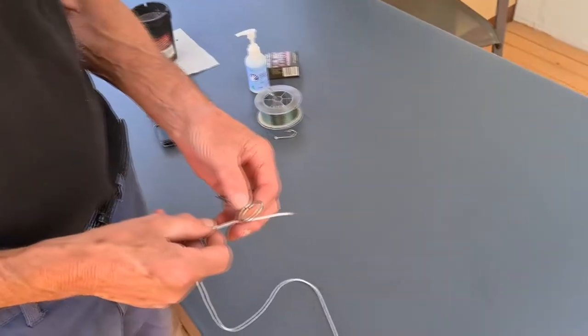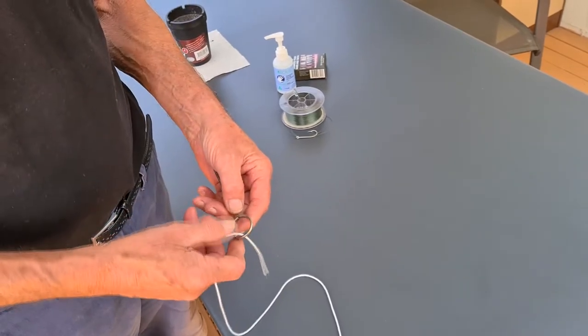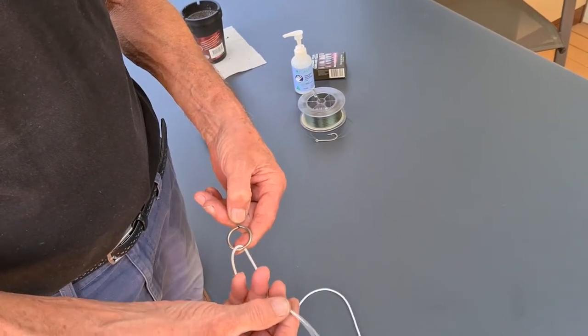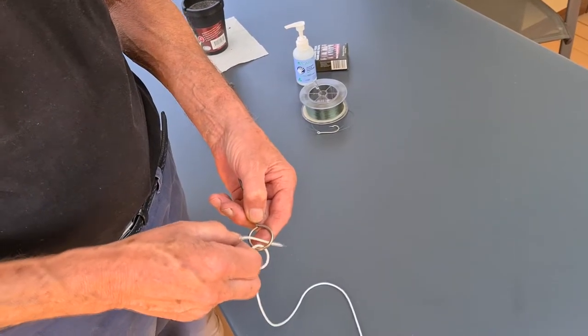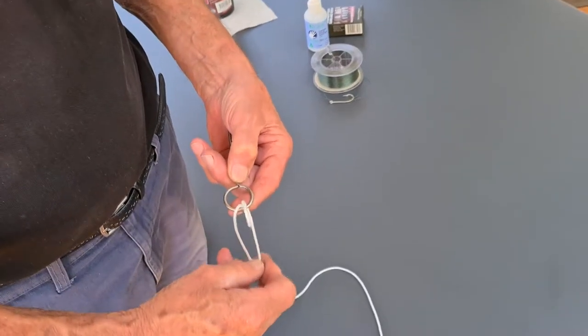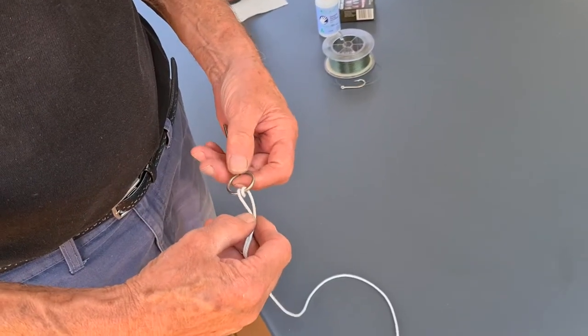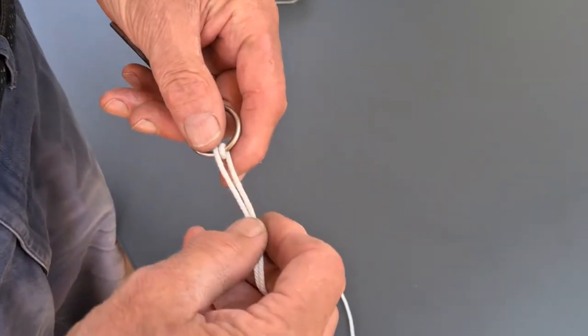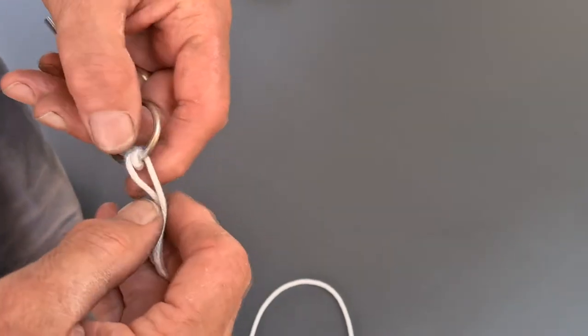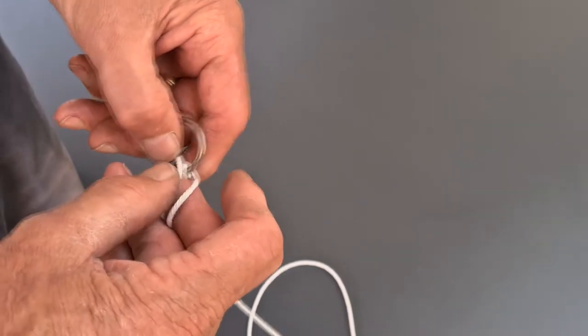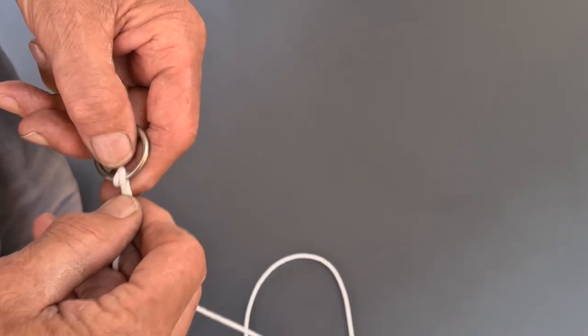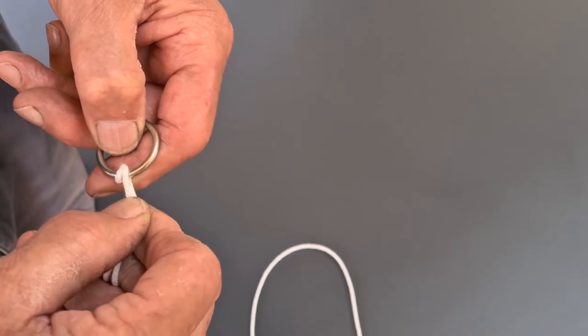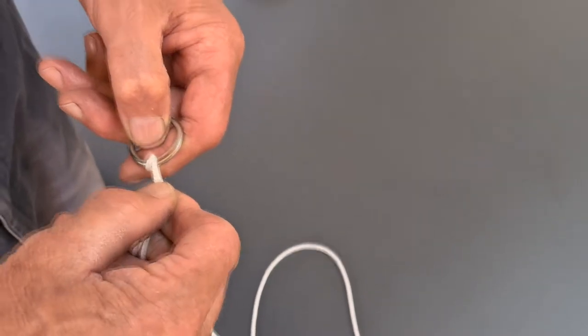Because what happens, the only difference between a single blood knot and a double blood knot, you put the line through the hook twice and what we found in the process, if it stays like that it's safe, but in the process while you're doing the rest of the procedure, sometimes these two lines, they cross each other and what we found, they actually cut each other when we tried measuring the strength.